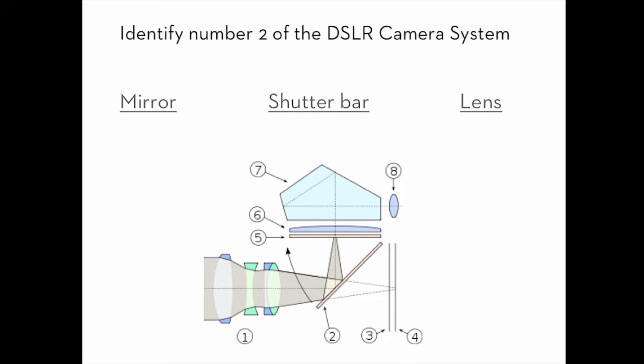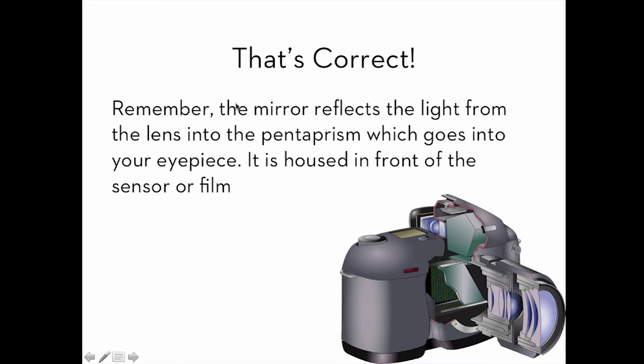Number two of the DSLR design scheme. Mirror, shutter bar, or lens? Number two. Of course, it is going to be the mirror. That's right. Remember, the mirror reflects the light from the lens into the pentaprism that goes into your eyepiece. It is also housed in front of the sensor or film. So remember, the light enters here, hits that mirror, bounces up, hits the pentaprism, and goes out your eyepiece. In case you forgot, when you take the picture, the mirror flips up, the shutter opens, and then the light enters and hits that RGB CMOS sensor.